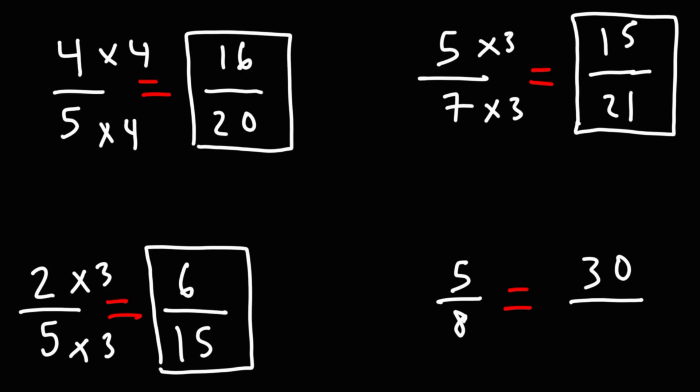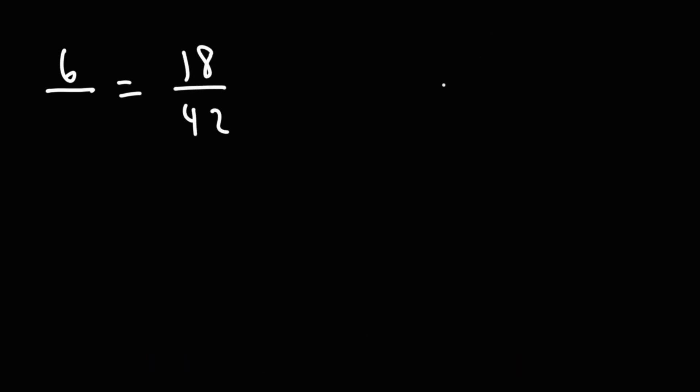Now moving on to the next example, we have 5 over 8 equals 30 over what number. 30 divided by 5 is 6, so to get to 30 we got to multiply 5 by 6. Thus 8 times 6 is 48, so 30 over 48 is equivalent to 5 over 8.